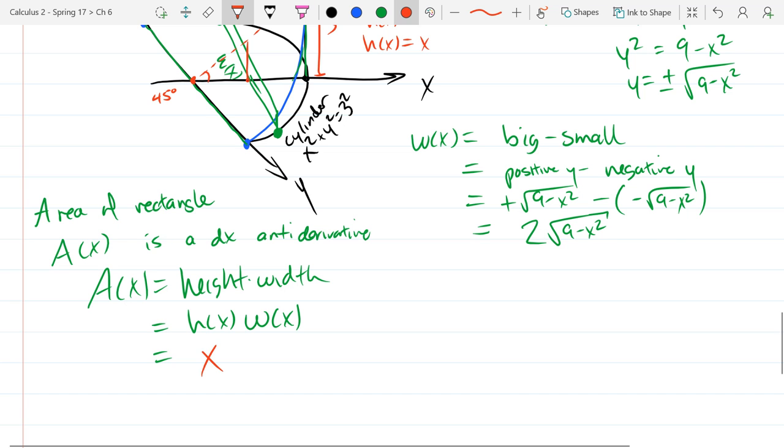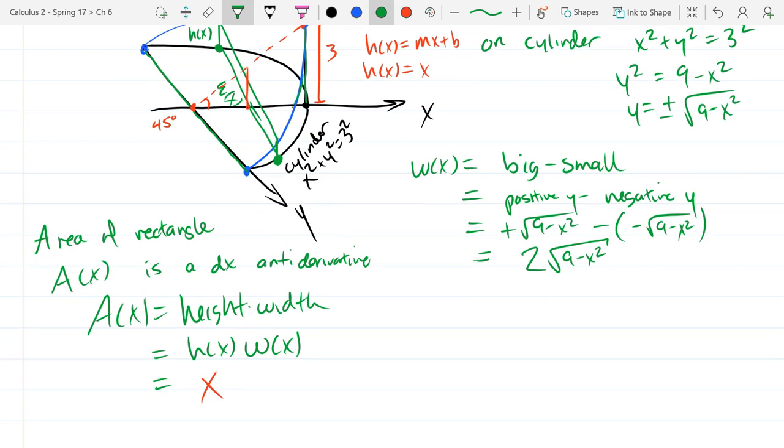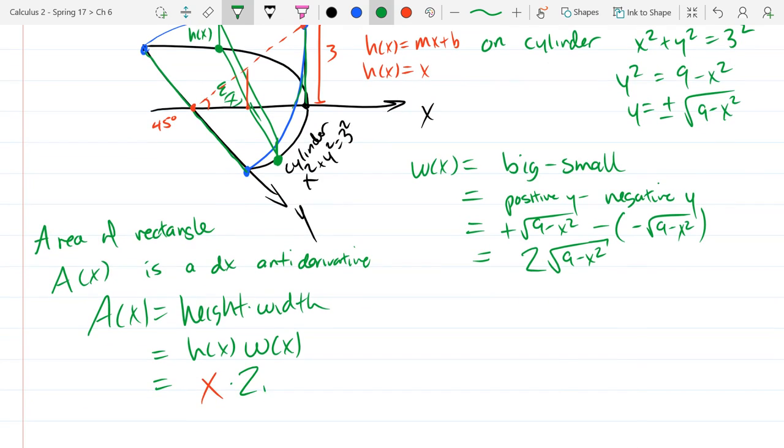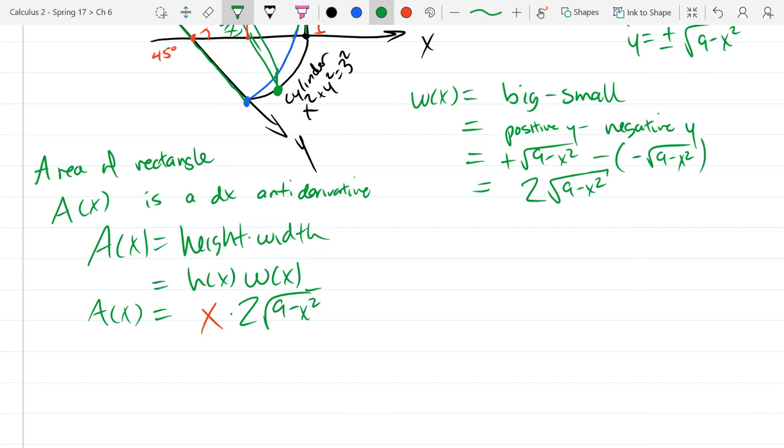And we'll write that, that's just x. Now I need to find the width. So we have the width. I'm going to go back to green. Oh, we already did the width. Yeah, we're pretty much there then. So we got x times 2 square root 9 minus x squared. And that is our a of x. So we got a height and our width. And we just put this into an integral.